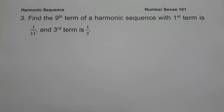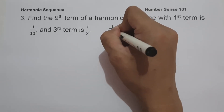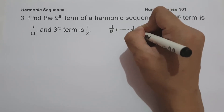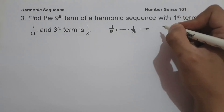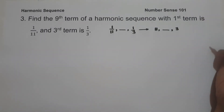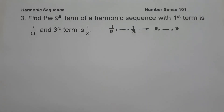On example number 3, find the 9th term of a harmonic sequence whose first term is 1/11 and third term is 1/3. Our given values are: first term 1/11 and third term 1/3. Taking reciprocals, we get 11 and 3 respectively. Before finding the 9th term, we find the arithmetic mean between 11 and 3.